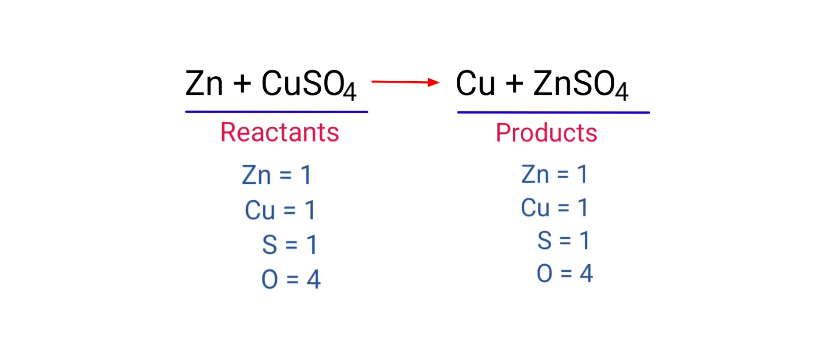If you observe this equation, the number of atoms at the reactants side are same as the number of atoms at the products side. In the reactants side, there are 1 zinc atom, 1 copper atom, 1 sulfur atom, and 4 oxygen atoms present.